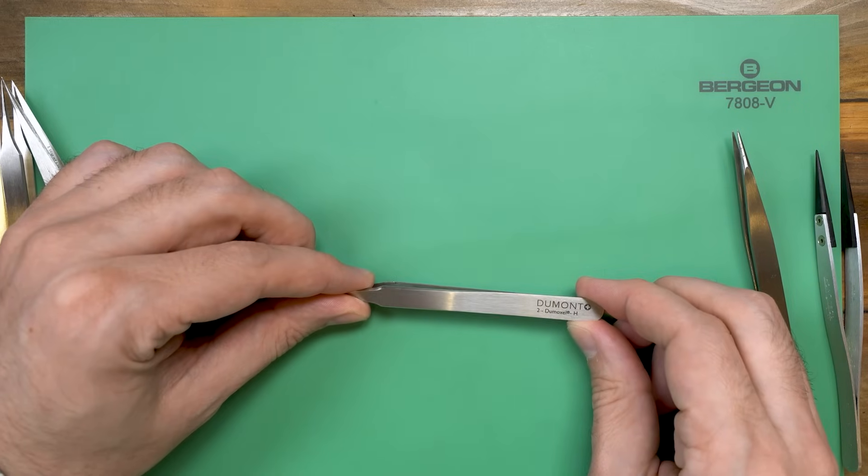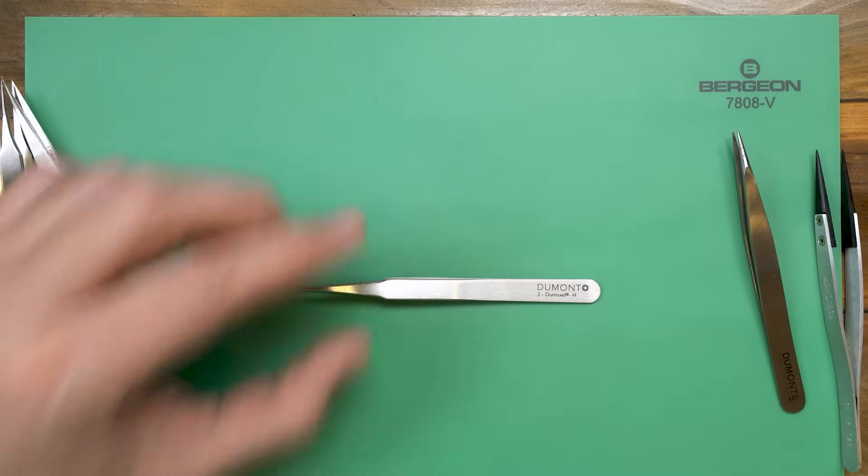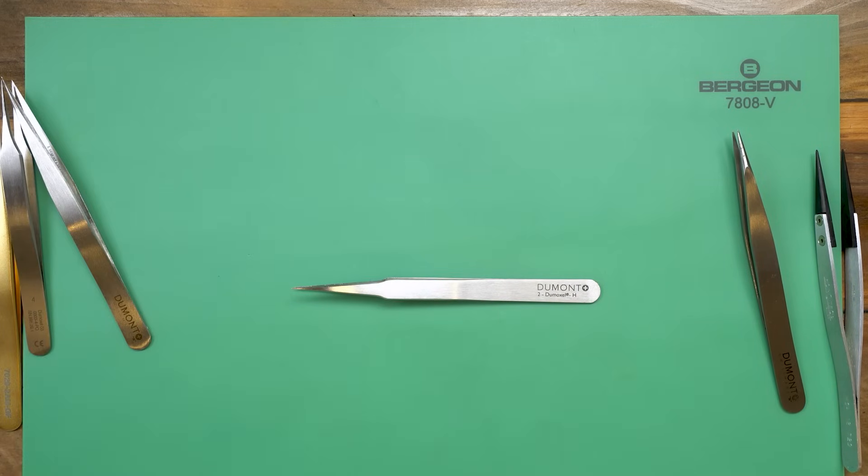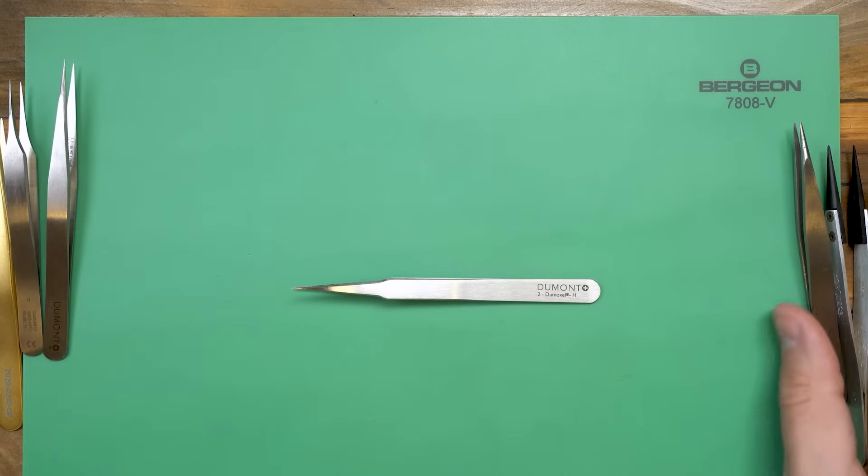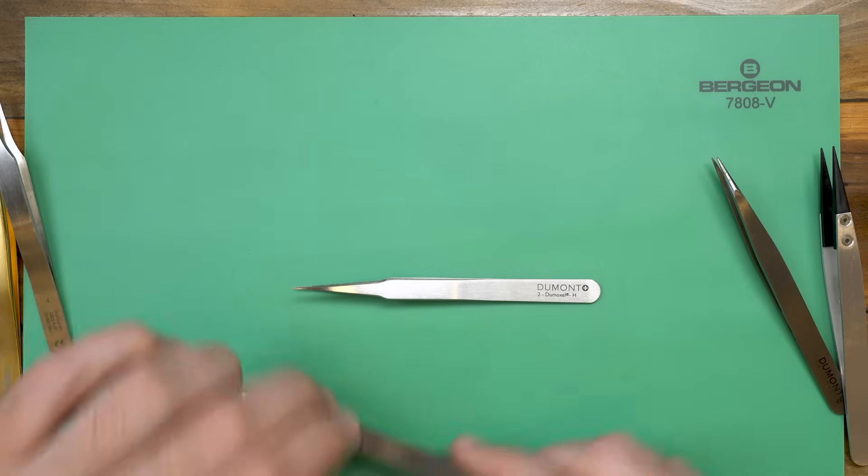Good Dumont tweezers are about thirty five dollars. The generic ones, well they're about three bucks. Now there is a huge difference in quality here, but the cheap ones will definitely let you pick up small objects for a while. They'll just wear out quickly.